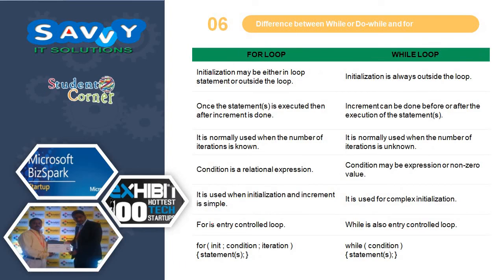Difference between for loop and while loop: in for, initialization may be either in the loop statement or outside the loop; in while, initialization is always outside the loop. In for, increment or decrementation is done after the statement is executed; in while, it may be done before or after. For loop is normally used when the number of iterations is known; while loop is used when the number of iterations is unknown. Condition in for is a relational expression; in while, the condition may be an expression or non-zero value. For is used when initialization or decrementation is simple; while is used for complex initialization. Both for and while are entry-controlled loops.